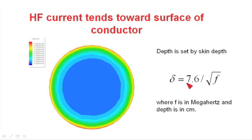In copper, the skin depth is simply 7.6 divided by the square root of frequency, where frequency is in megahertz, and the depth is in centimeters.